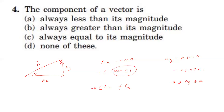That means the component of a vector may be equal to the vector's magnitude or less than it. So a component is either less than or equal to the vector — it is not always less than, not always equal to, and never always greater than. Therefore for the fourth question, the answer is 'none of these,' because a component may be equal to or less than the vector.